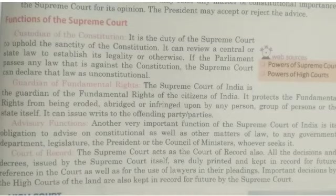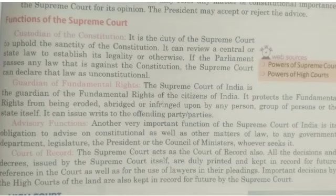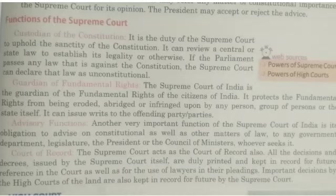Regarding service and conditions: the Chief Justice of a High Court holds office till they attain the age of 62 years, while the Chief Justice of the Supreme Court may retain the post till 65 years. Judges of the High Court receive a monthly salary besides other allowances. They also get free accommodation, and their salary and allowances are revised from time to time.